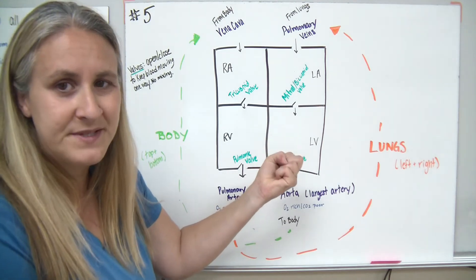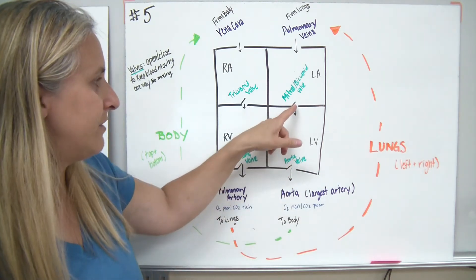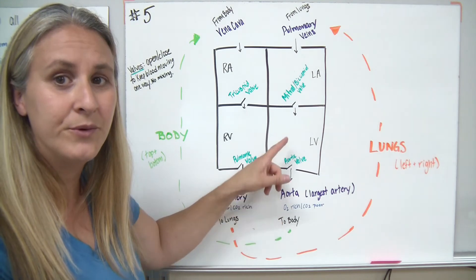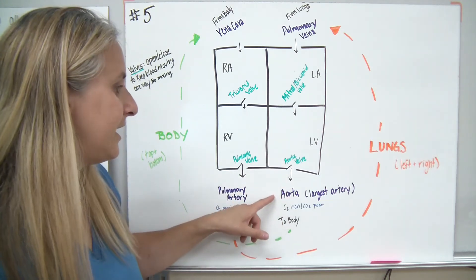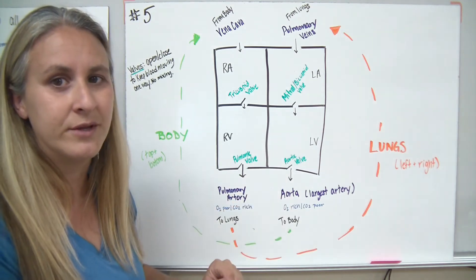When the left ventricle pumps and squeezes, that valve is going to close and it's going to allow the blood to go through the aortic valve into the aorta, which is the largest artery of the body.